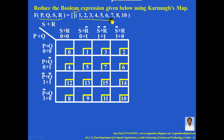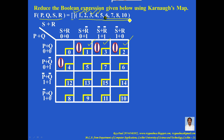Now in the specified cells you need to mark 0, because in PI format 0 is given importance. Mark 0 in cells 1, 2, 3, 4, 5, 6, 7, 8, and 10. In the remaining cells you need to mark 1.